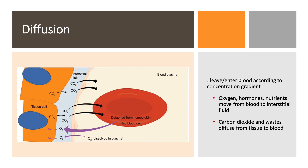The first mechanism of capillary exchange we'll talk about today is probably the simplest: diffusion. Diffusion is just things moving down their concentration gradient, so moving from high to low concentration. That means things are going to enter or leave the blood depending upon where they have a high concentration, and they're going to go to where that concentration is lower.